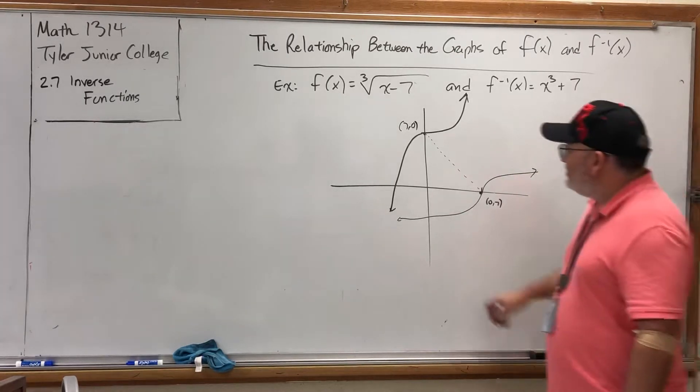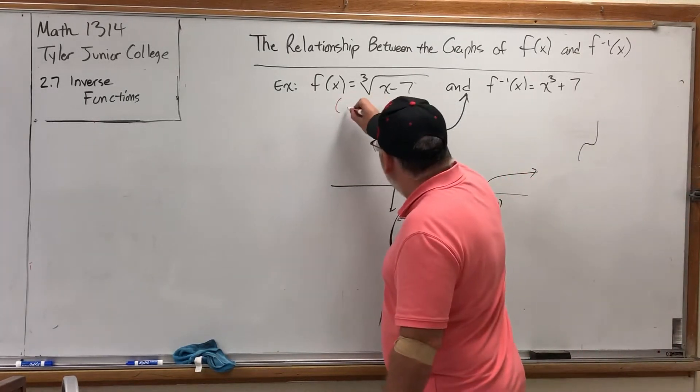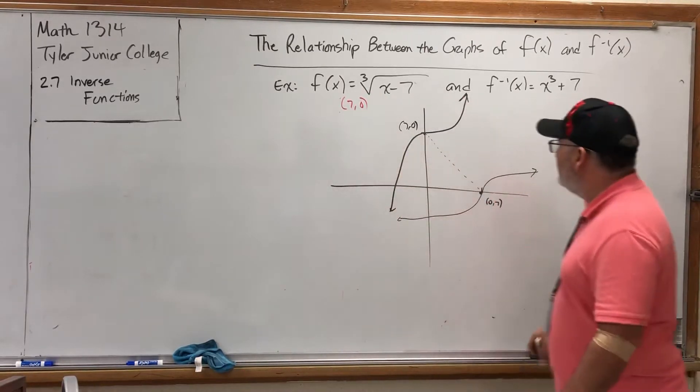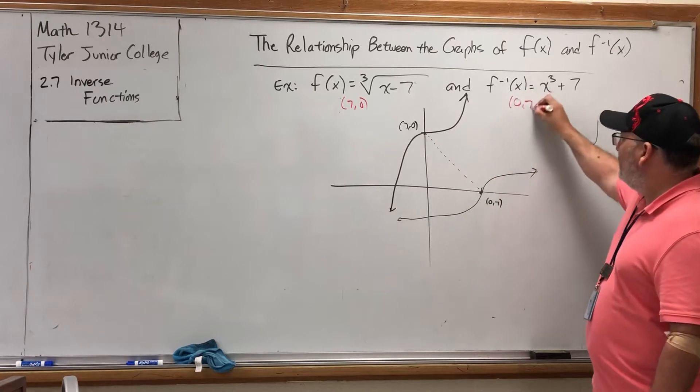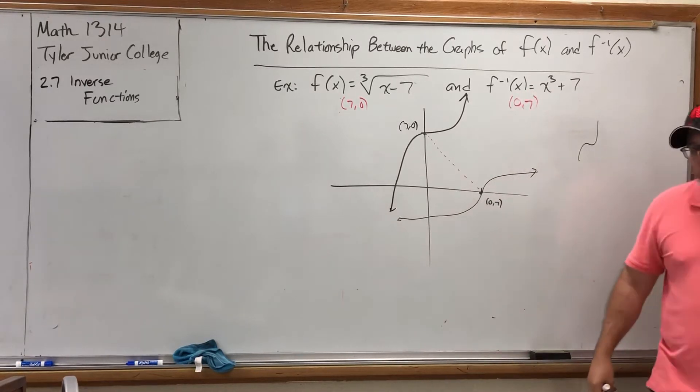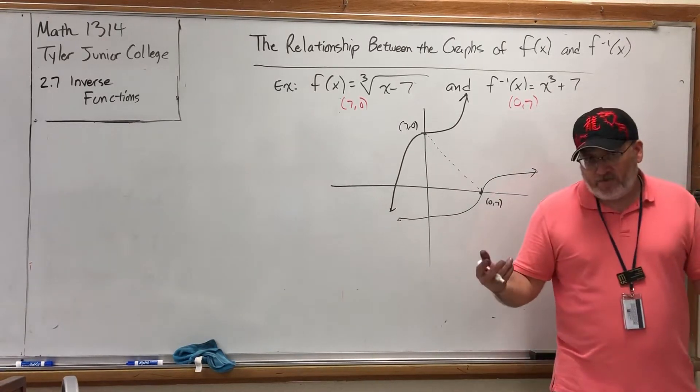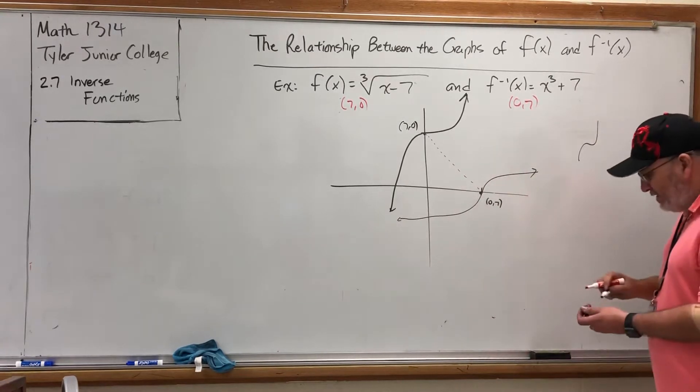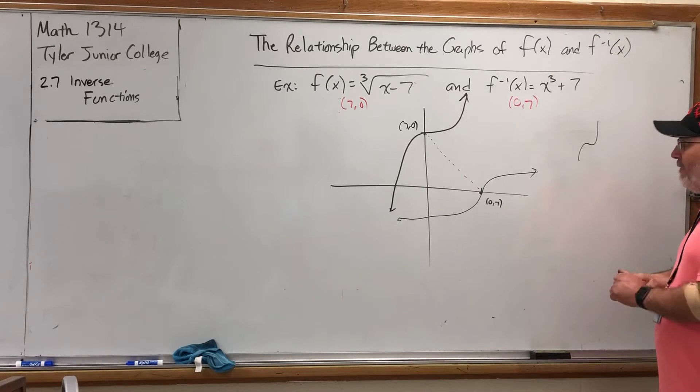So saying that (7,0) belongs to this function is the same as saying (0,7) belongs to this one. Because remember, the core definition of an inverse relation is to reverse the ordered pair. And we can say the same thing for any ordered pair we can locate on either graph.